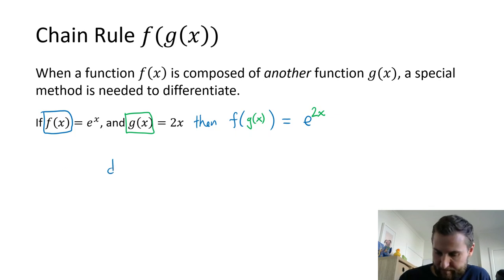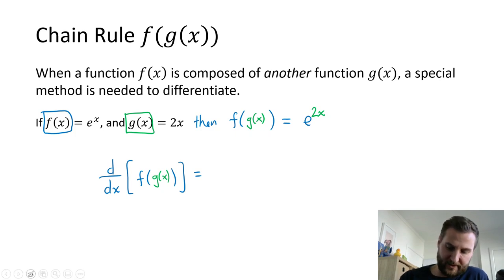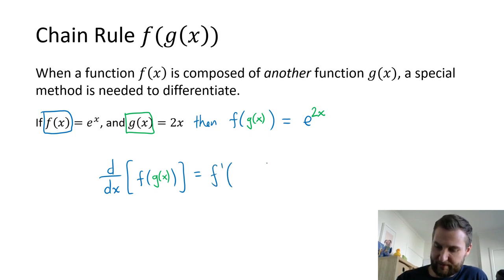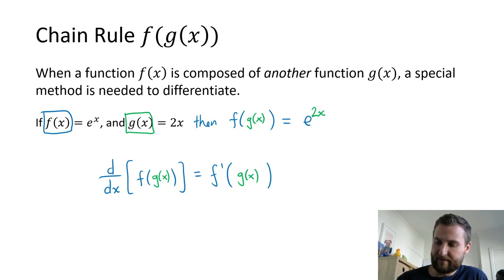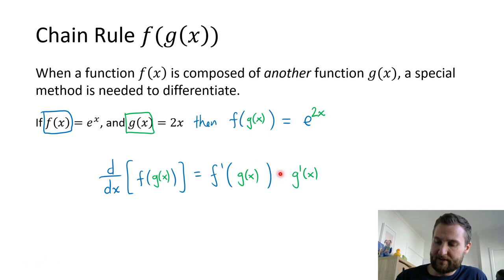So let's write out what the chain rule actually is. If I want to know the derivative of f of g of x, I do f prime of the whole thing — in this case, g of x — and then I have an extra corrective term. I need to multiply by the derivative of that composite function. So I have f prime of the whole thing, times the derivative of g of x. In this case, the derivative of the green part would just be multiplied by 2.